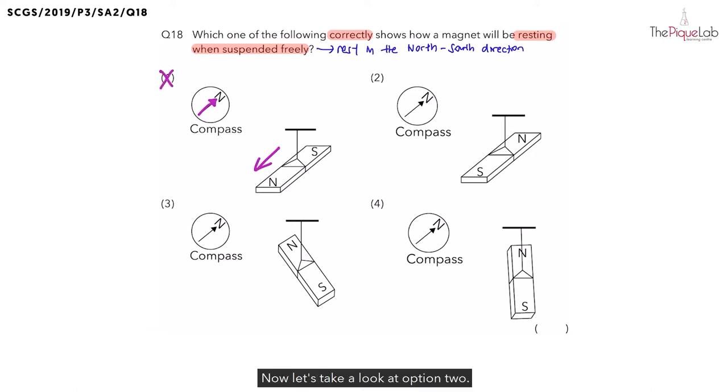Now let's take a look at option two. What is the direction that the freely suspended magnet comes to rest to? We see that the freely suspended magnet comes to rest in this north-south direction. Now is this the same as the compass needle? Yes. So is option two correct? Definitely. But let's check the rest of the options to be safe.